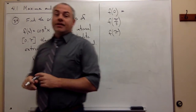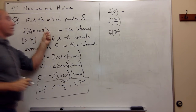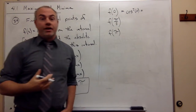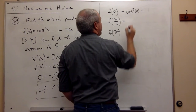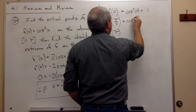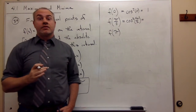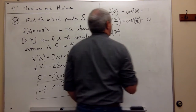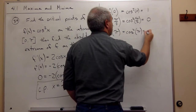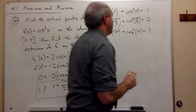Let's calculate these values. f(0) = cos²(0): cosine of zero is 1, and 1² = 1, so I get 1. f(π/2) = cos²(π/2): cosine of π/2 is 0, and 0² = 0, so I get 0. f(π) = cos²(π): cosine of π is −1, and (−1)² = 1, so I get 1.